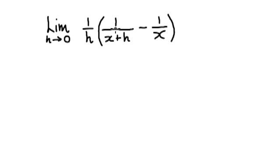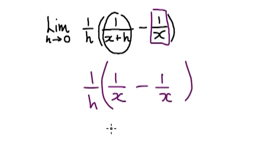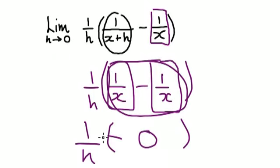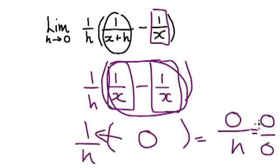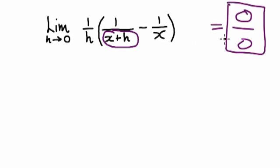So as h approaches 0, you can consider it as being 1 over x. And then you've got to take away this thing here, which is 1 over x. The same fraction take away the exact same fraction is going to be 0. And then you've got to multiply it to the top, so this then becomes 0 over h. But then as h approaches 0, it's going to be 0 over 0. So when you simply just do this, you're going to get 0 over 0.